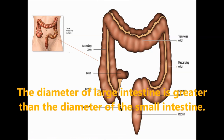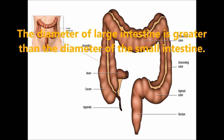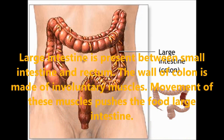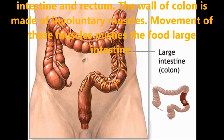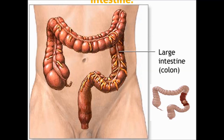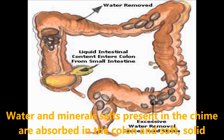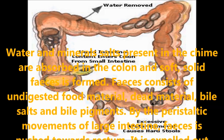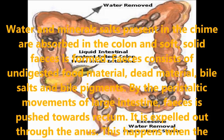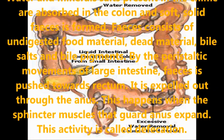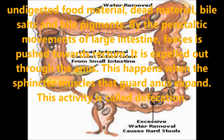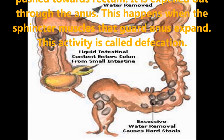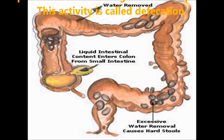After this, the food enters into the large intestine. The large intestine is greater in diameter than the small intestine and is present between the small intestine and the rectum. The wall of the colon is made up of involuntary muscles. Water, mineral salts present in the chyme are absorbed in the large intestine and soft solid feces are formed. This feces consists of undigested food material, dead bacteria, bile salts and bile pigments. By peristaltic wave-like movements of the large intestine, feces are pushed towards the rectum and expelled out through the anus when the sphincter muscles guarding the anus relax — this activity is called defecation.